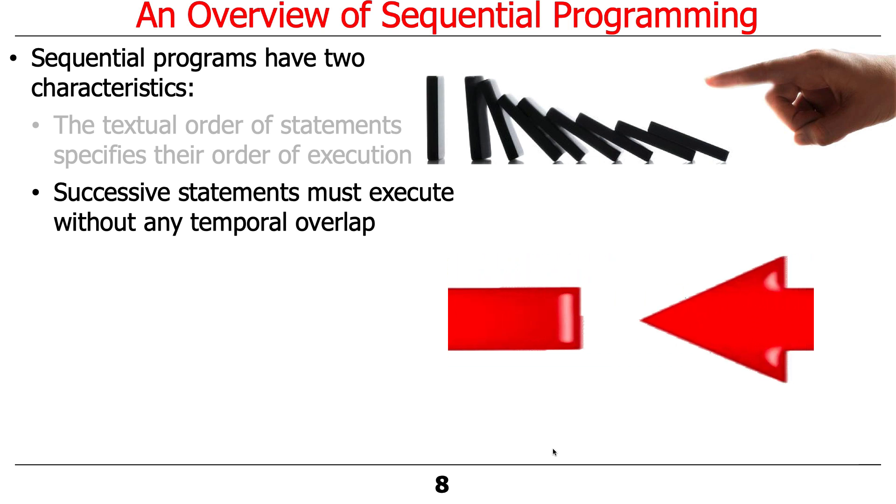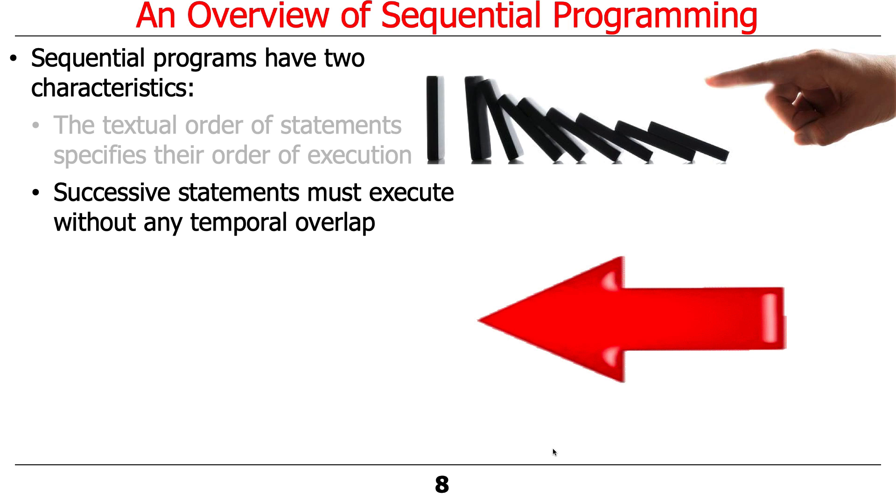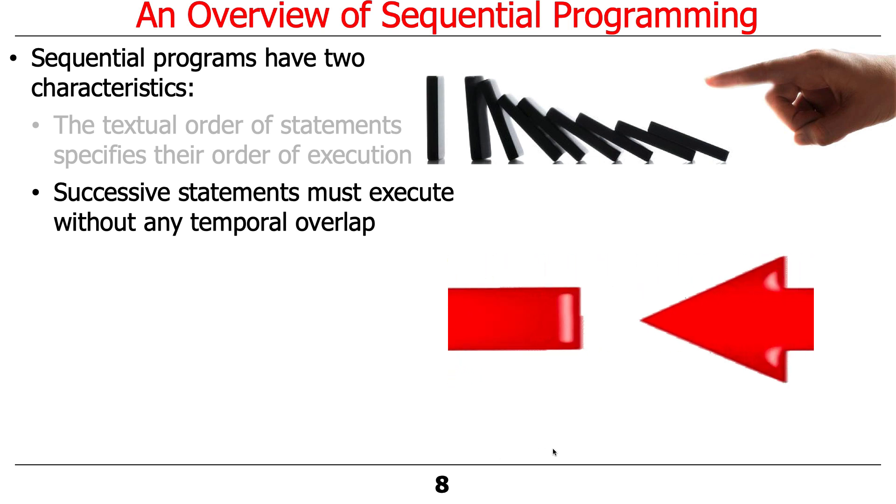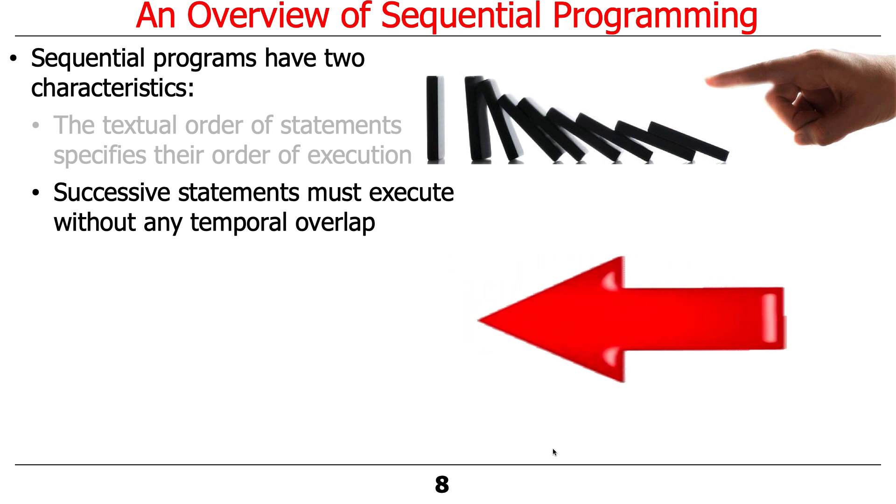The other thing to note here is that successive statements must execute without any temporal overlap. So at least logically, they're executed one at a time. Think about pushing the dominoes, each one falls and it knocks the next one down. But assuming that there's no wind or something like that, dominoes further down don't start to fall before the one ahead of it knocks into it.